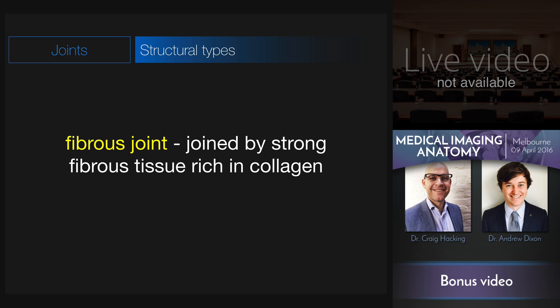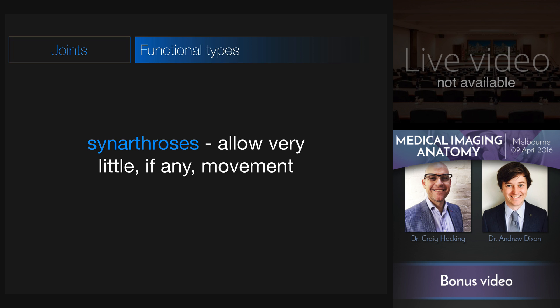A fibrous joint is joined by strong fibrous tissue, rich in collagen. These joints are defined functionally as being synarthroses, in that they allow very little movement, if any.